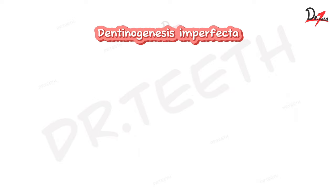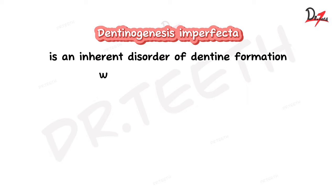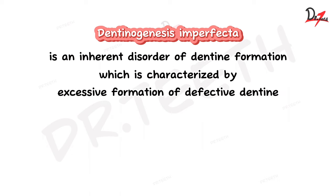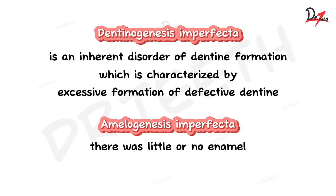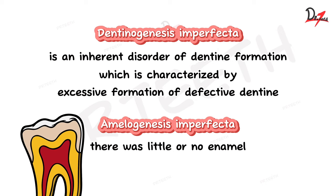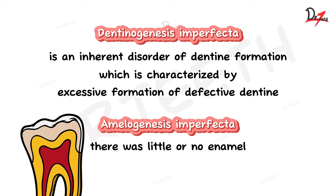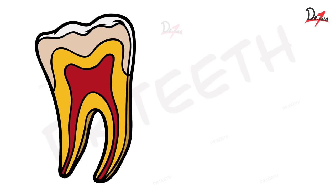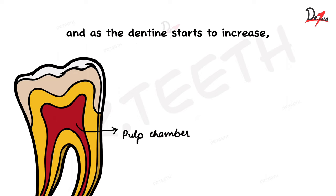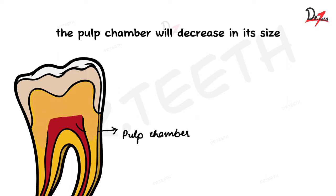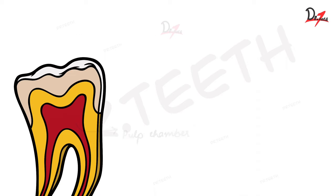Dentinogenesis imperfecta is an inherited disorder of dentine formation, characterized by excessive formation of defective dentine. In Amelogenesis imperfecta there was little or no enamel, but in Dentinogenesis imperfecta we have increased formation of dentine and that dentine is defective. This increase in the bulk of dentine obliterates the pulp, making the pulp chamber smaller — a characteristic feature of Dentinogenesis imperfecta.